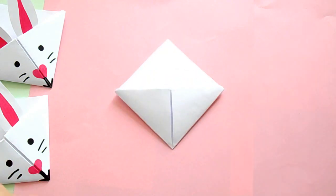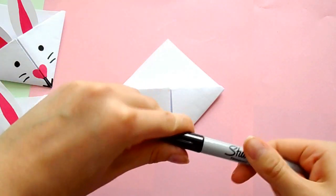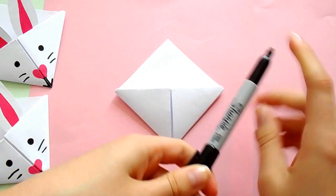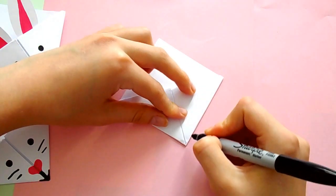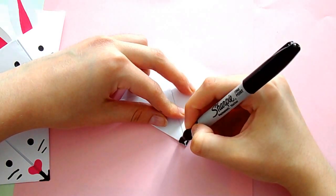There's the bookmark. Now it's time to decorate, so first we have to add our whiskers. Just take a black marker, I'm using a Sharpie, and just draw two lines along the paper at the very bottom corner, and then one right at the center.